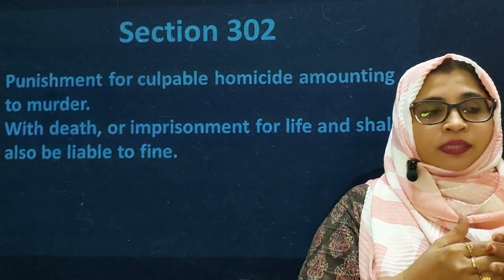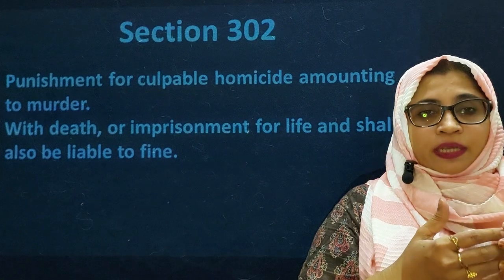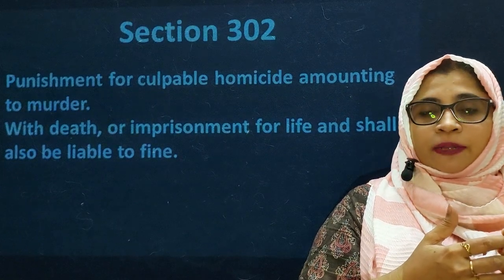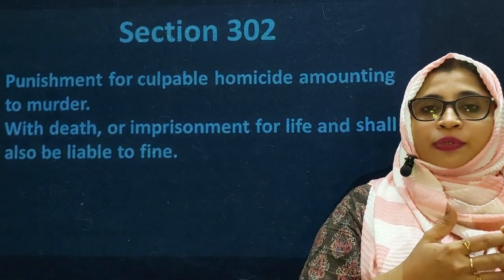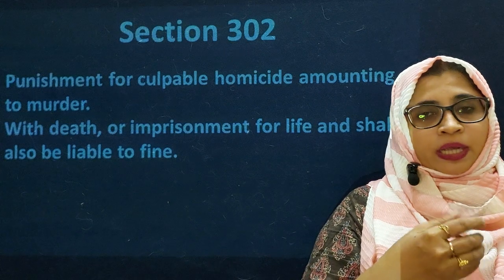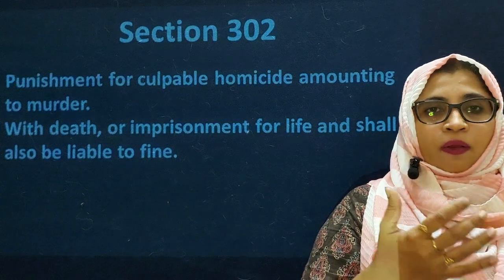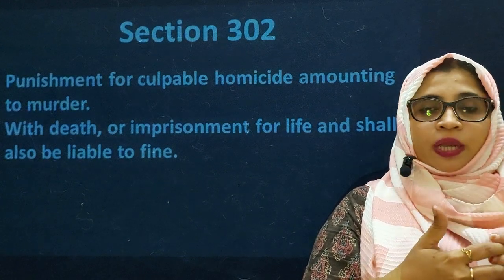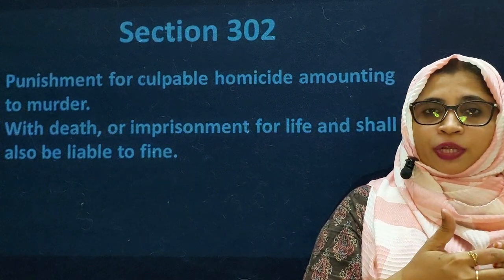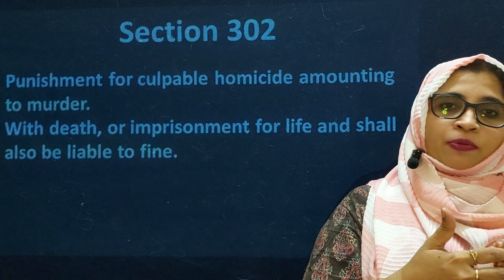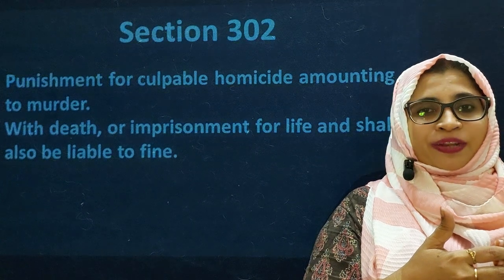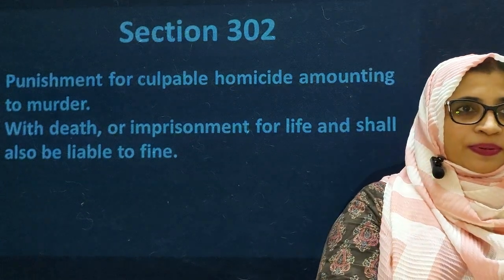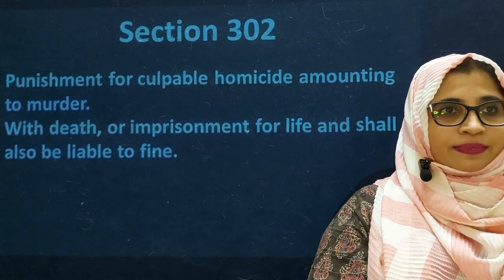For Section 302 — punishment for murder or culpable homicide amounting to murder — the punishment is death penalty or life imprisonment, and shall also be liable to fine. The death penalty is given in the rarest of rare cases only; life imprisonment is the preferred punishment for offenses relating to Section 300.